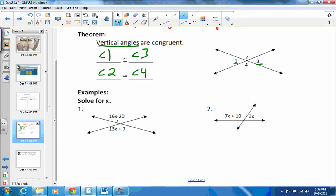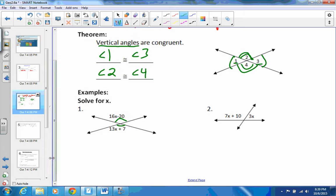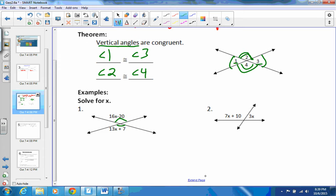For the first one, we know that the vertical angles are congruent. Then this angle, and this is how you show that they're congruent, you use the arcs. So we're going to say that this is congruent to this angle, so that means that their angle measures are also congruent. All right, so 16x minus 20 is going to be equal to 13x plus 7, just by that theorem. We know that the angles are congruent, so their measures are equal. And now we can solve for x.